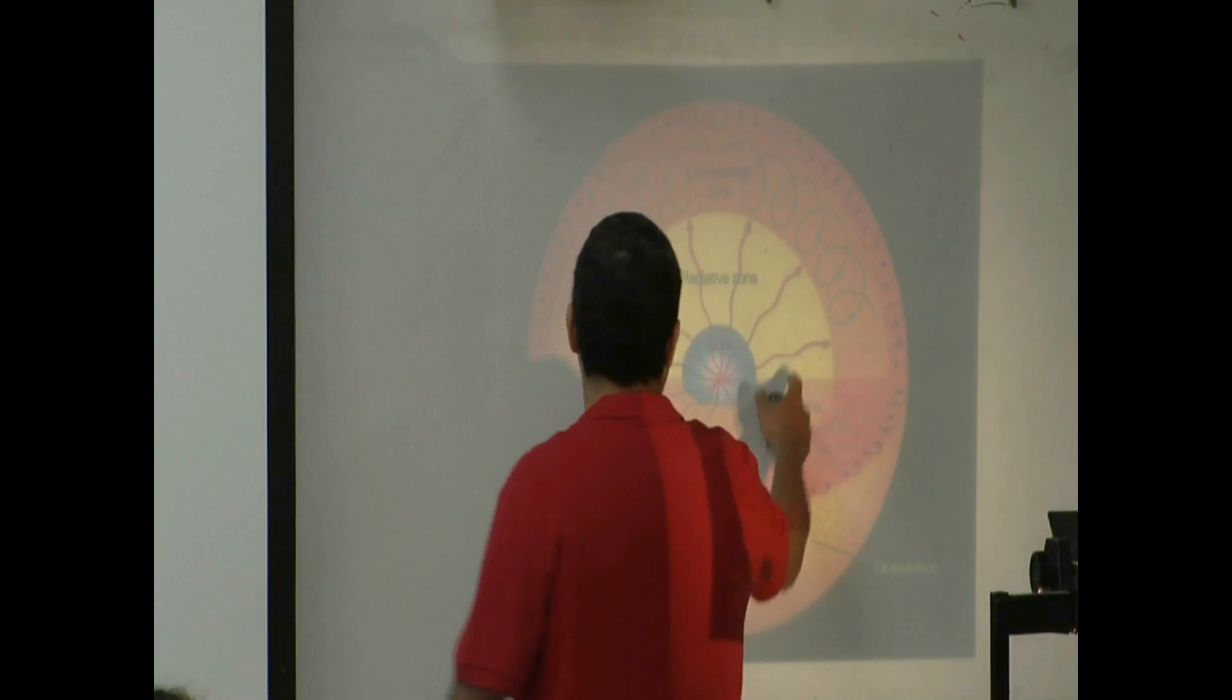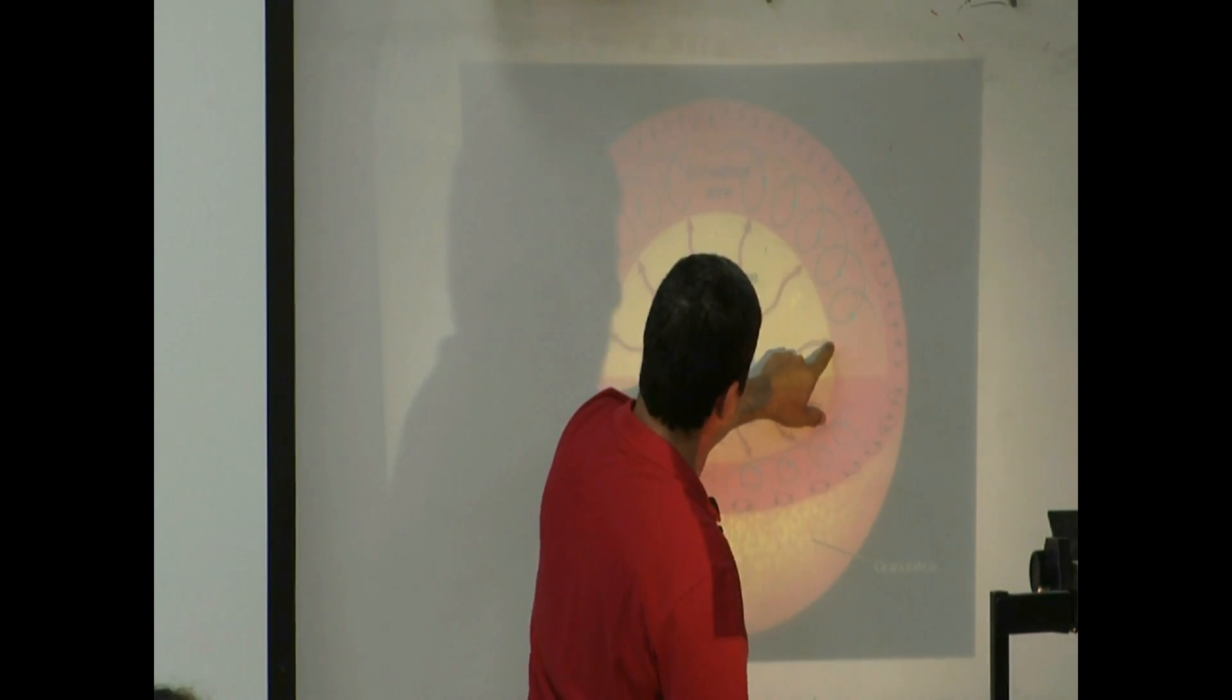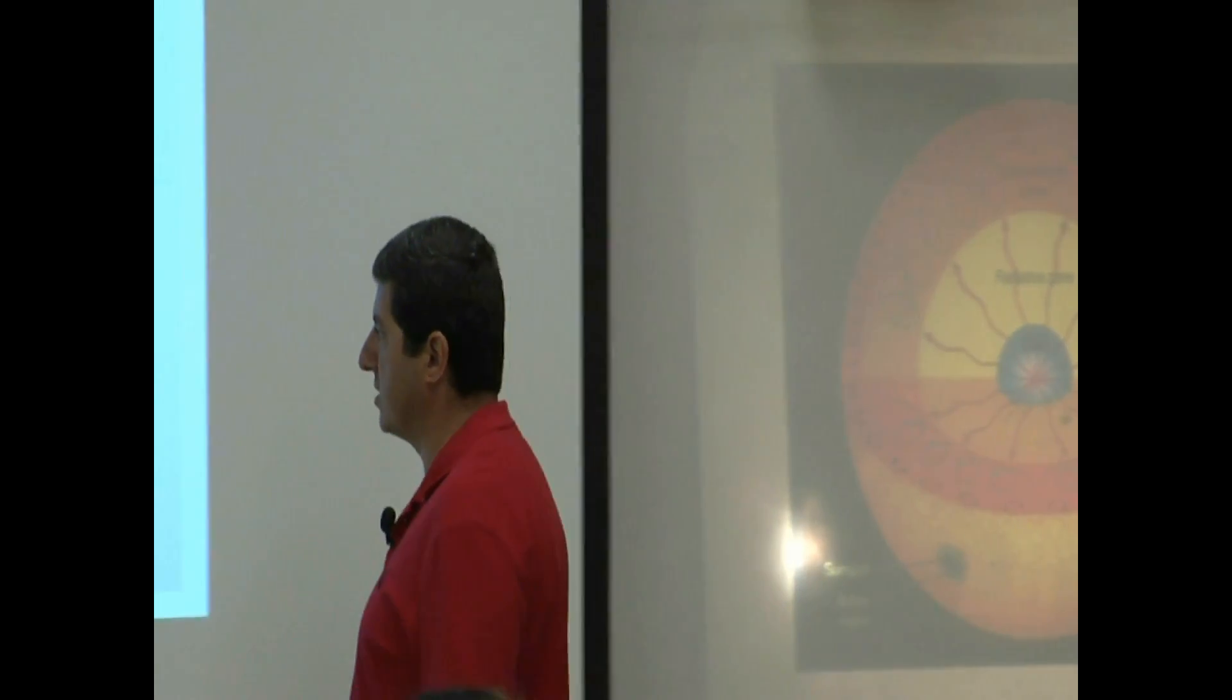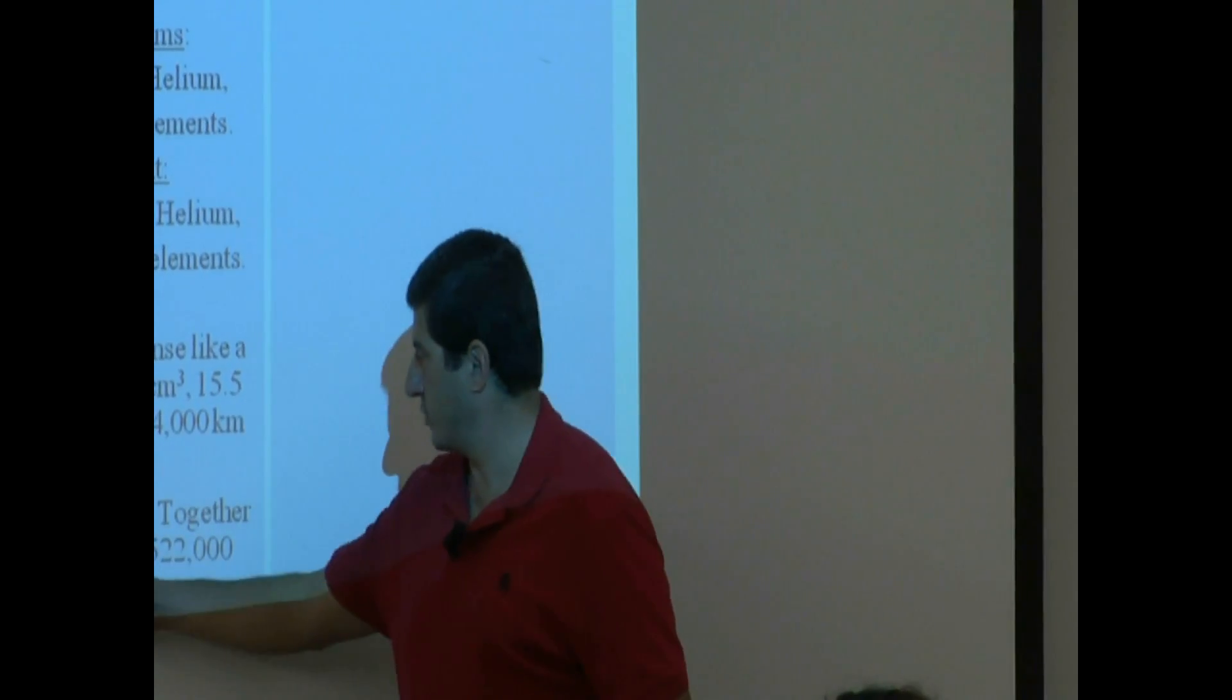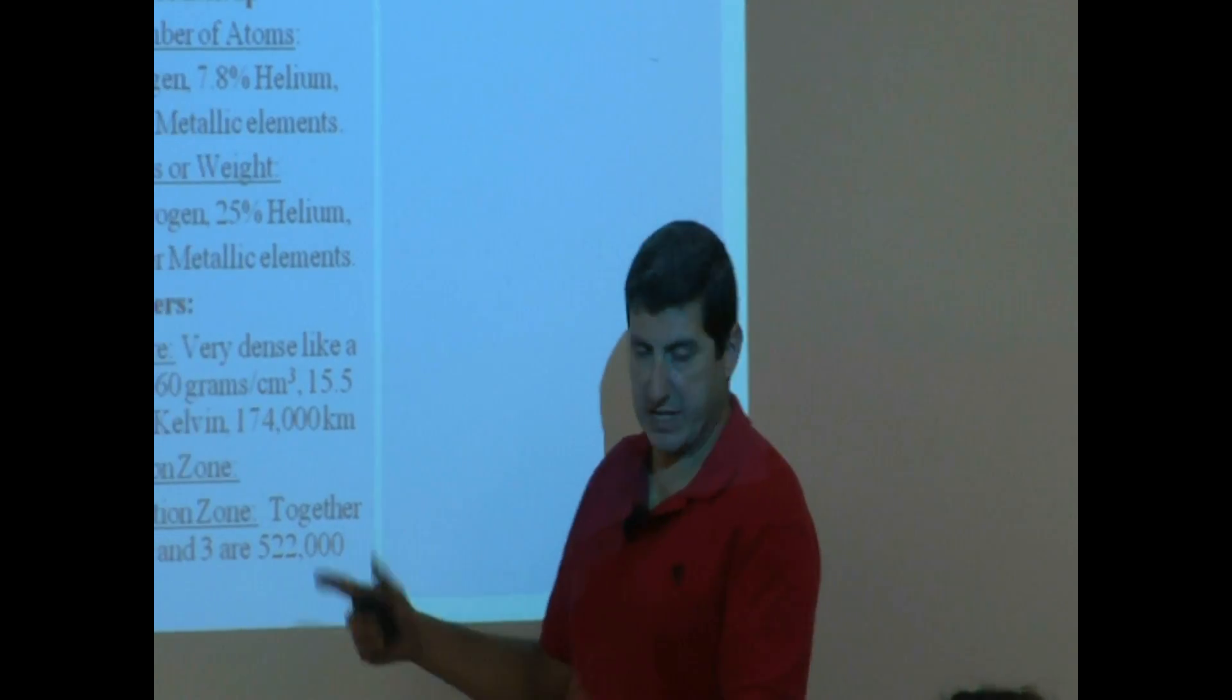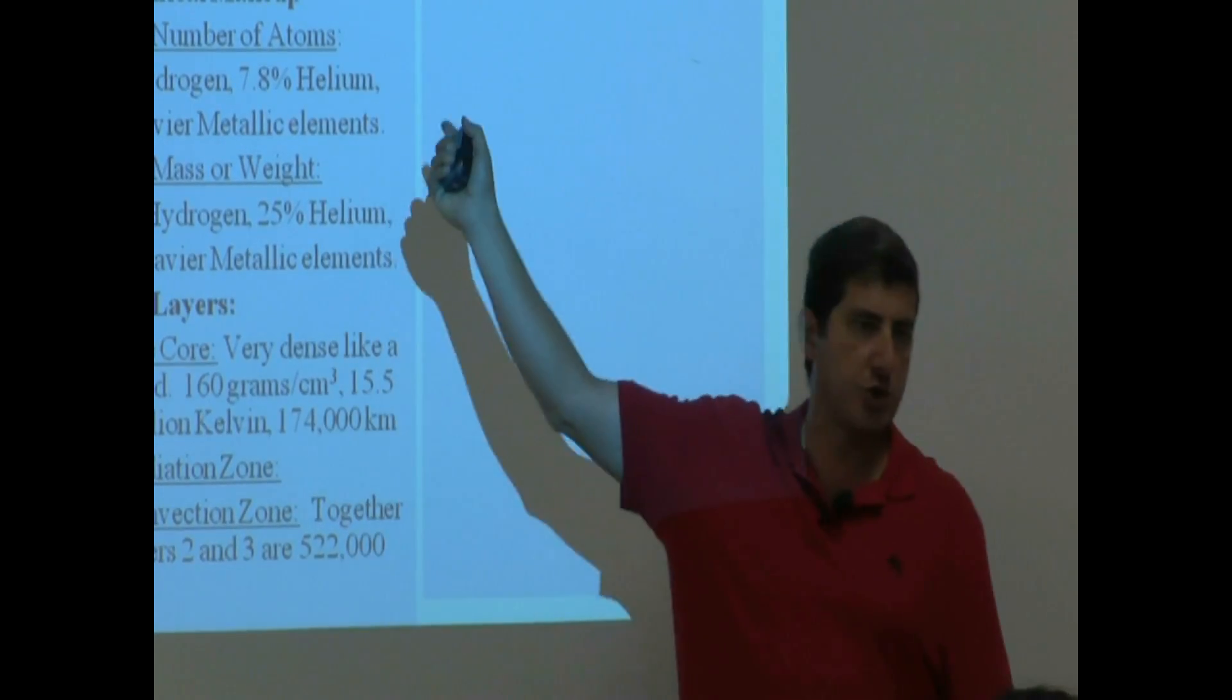Radiation zone. So that's this one here. You see the energy radiates outward? And then eventually, there comes a point where instead of radiating, it starts convecting, convection zone. So radiation zone, convection zone. Together, layers 2 and 3 are 522,000 kilometers, this one and this one. Together, this one plus this one makes the radius of the sun. When you add them, you will get the same number that was shown on the first slide, which is the radius of the sun.